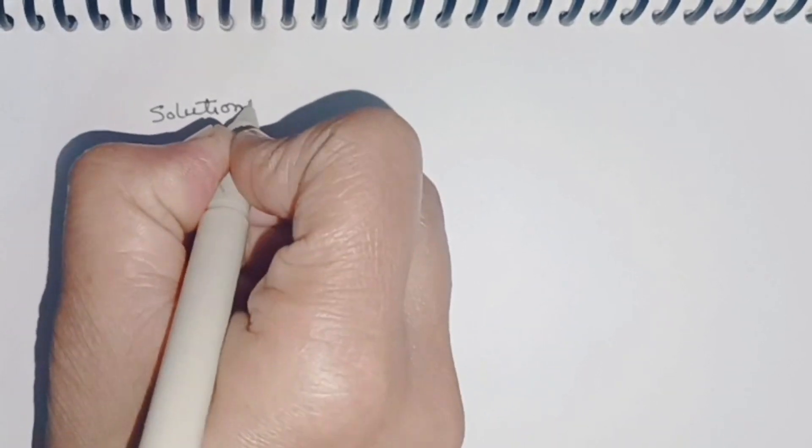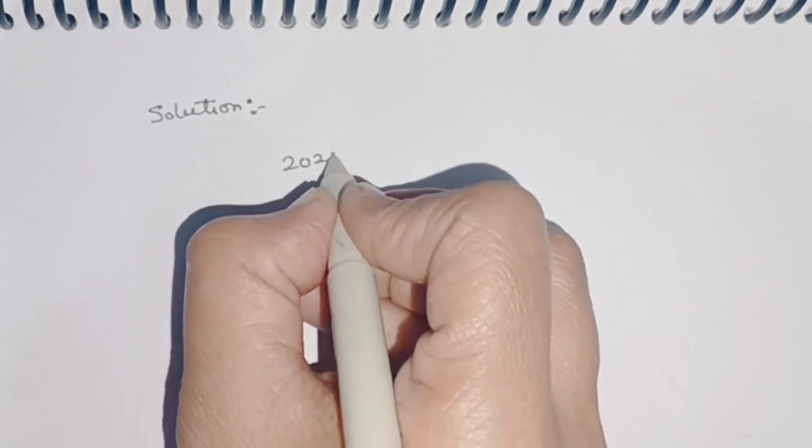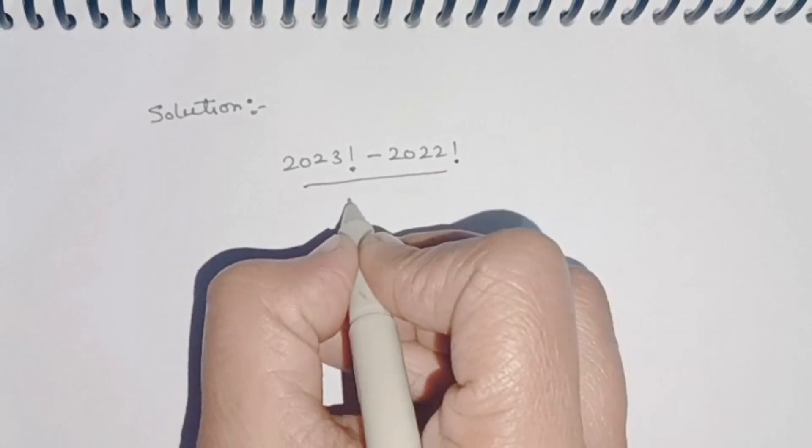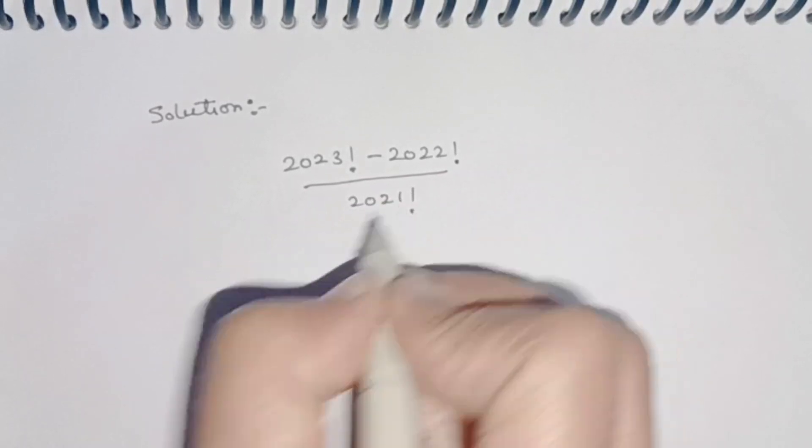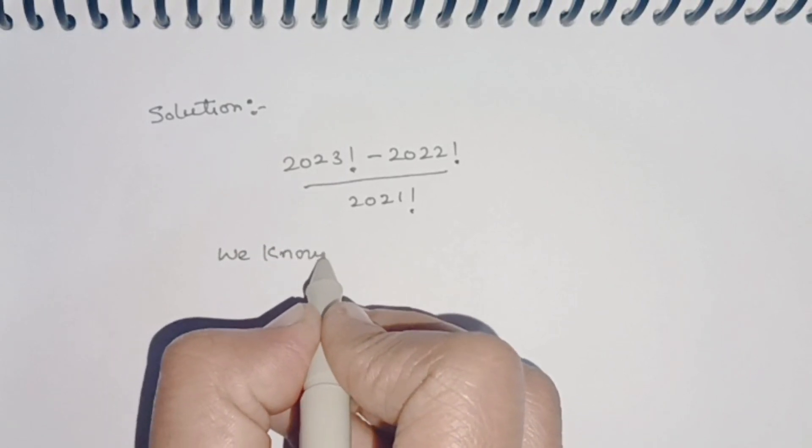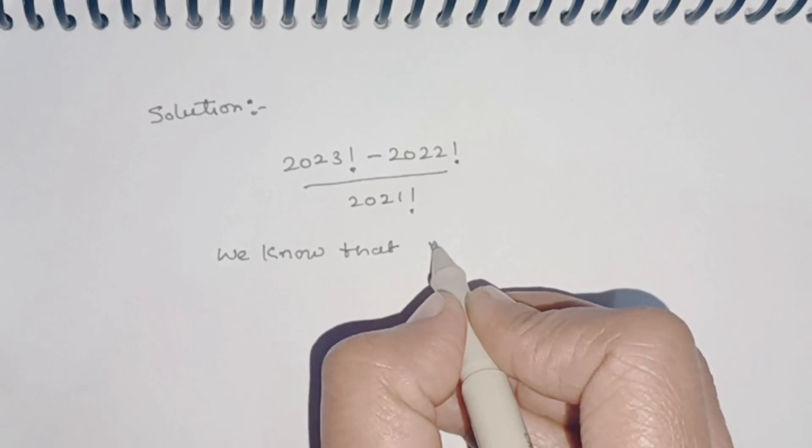Come to the solution. We have to calculate (2023! - 2022!) / 2021!. Now we know that n! can be written as n × (n-1)!.